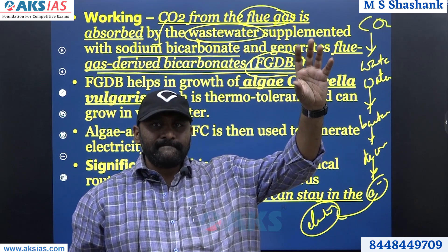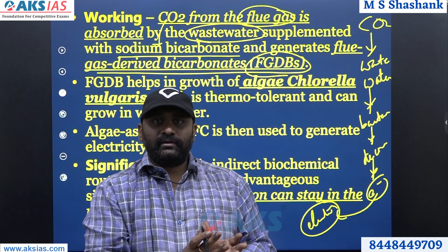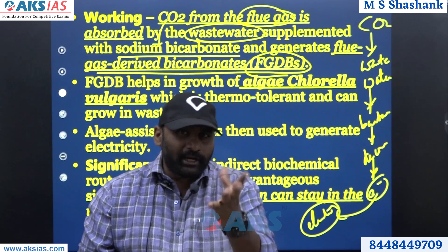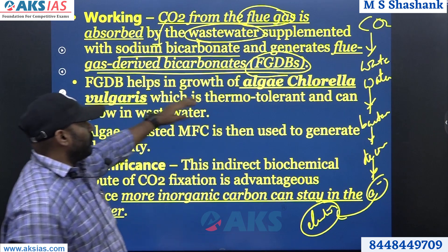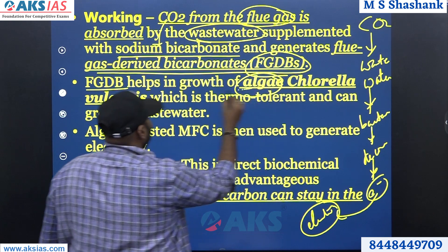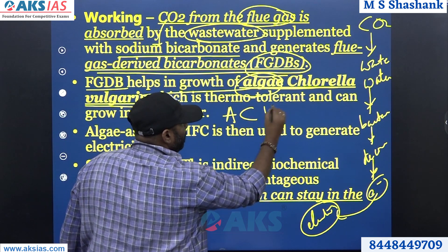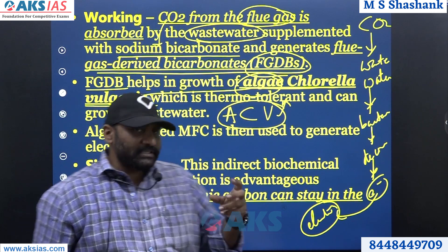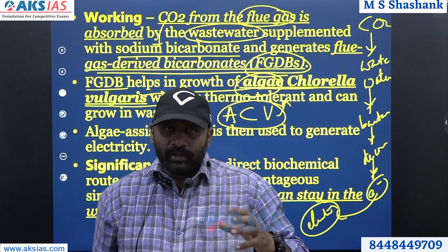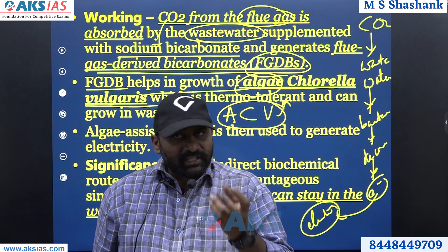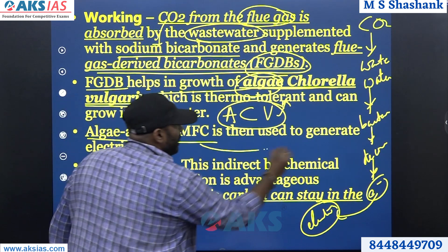Carbon dioxide is put into waste water; sodium bicarbonate is added as solid waste material. These FGDBs help in the growth of algae — Chlorella vulgaris. Please remember this: algae Chlorella vulgaris, or ACV. The highlight of this algae is that it is thermally tolerant — it can sustain high temperatures. When hot waste comes in, this algae can sustain it and starts decomposing the material. Those algae-assisted MFCs are used to generate electricity.